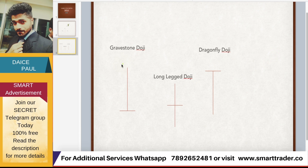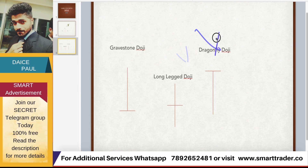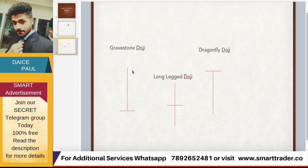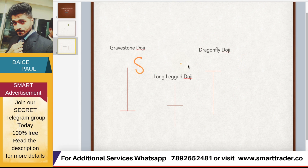So if you are getting the gravestone doji near resistance and the dragonfly doji near support, you can definitely use them. Normally a regular doji is a reversal pattern — in an uptrend they say it goes down, in a downtrend they say it goes up — but not always. The gravestone doji near resistance and dragonfly doji near support are more reliable signals you can observe for sell or buy direction.